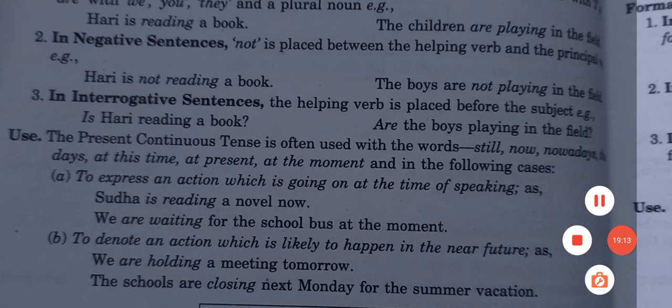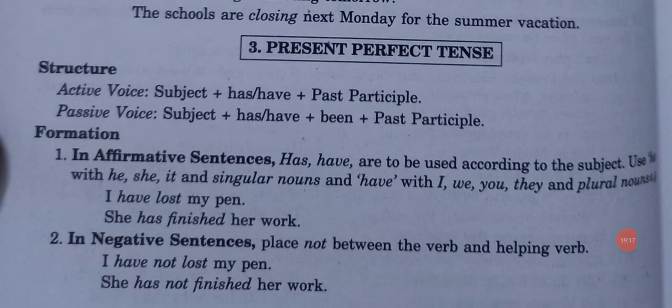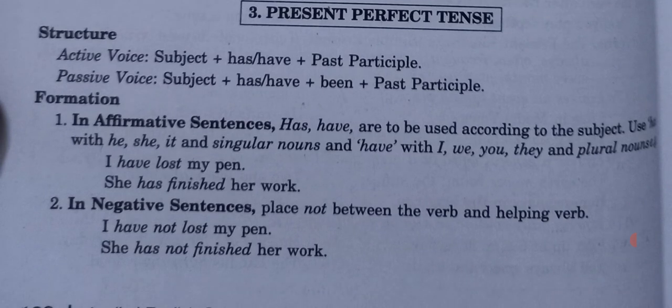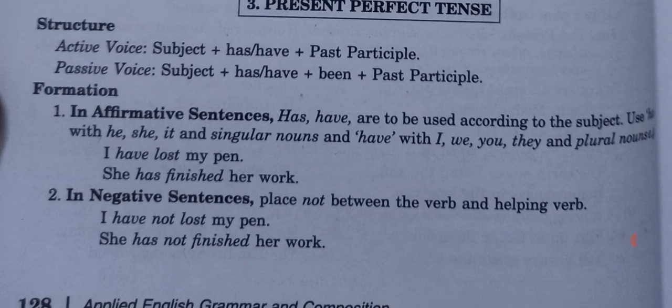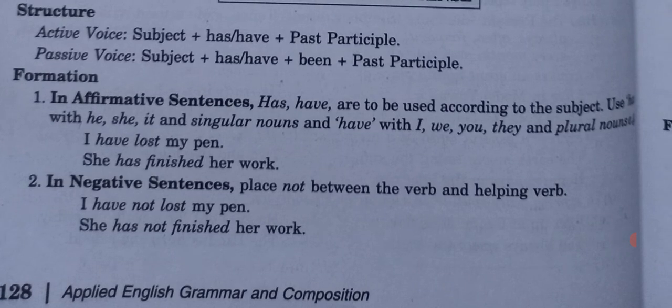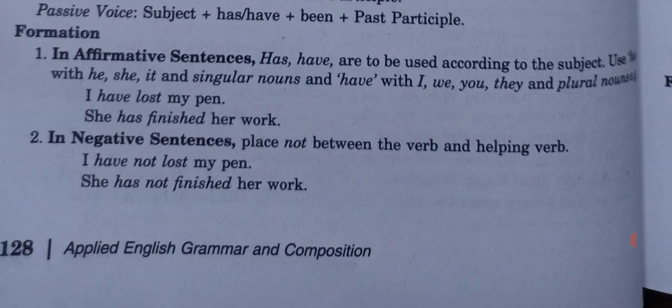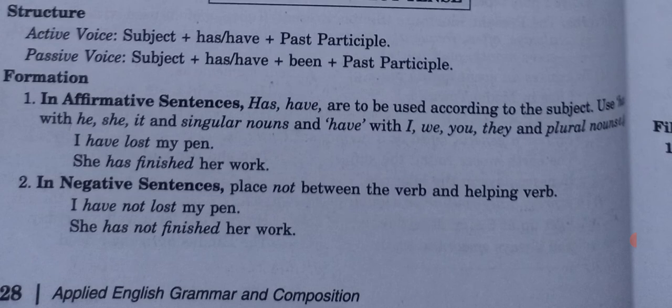Present perfect tense structure: subject plus has or have plus third form of the verb plus object. Use 'has' with singular and 'have' with plural. Its passive form: subject plus has or have plus been plus third form of the verb. In affirmative sentences, use has/have according to the subject. Examples: 'I have lost my pen', 'She has finished her work'. In negative sentences, place 'not' between the helping verb and main verb: 'I have not lost my pen', 'She has not finished her work.'